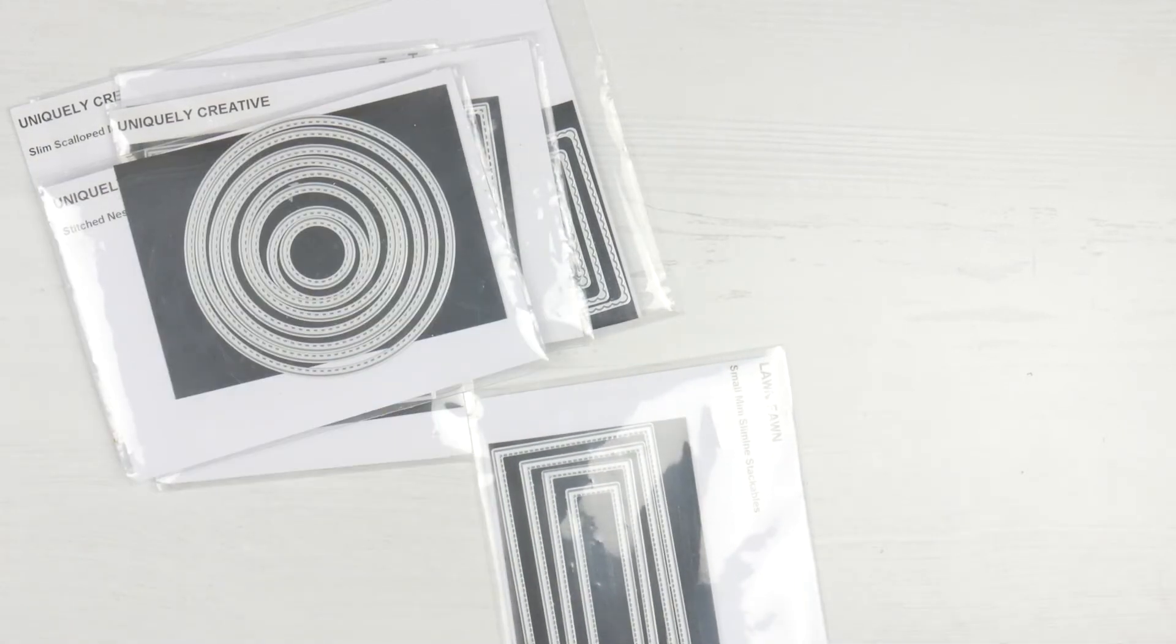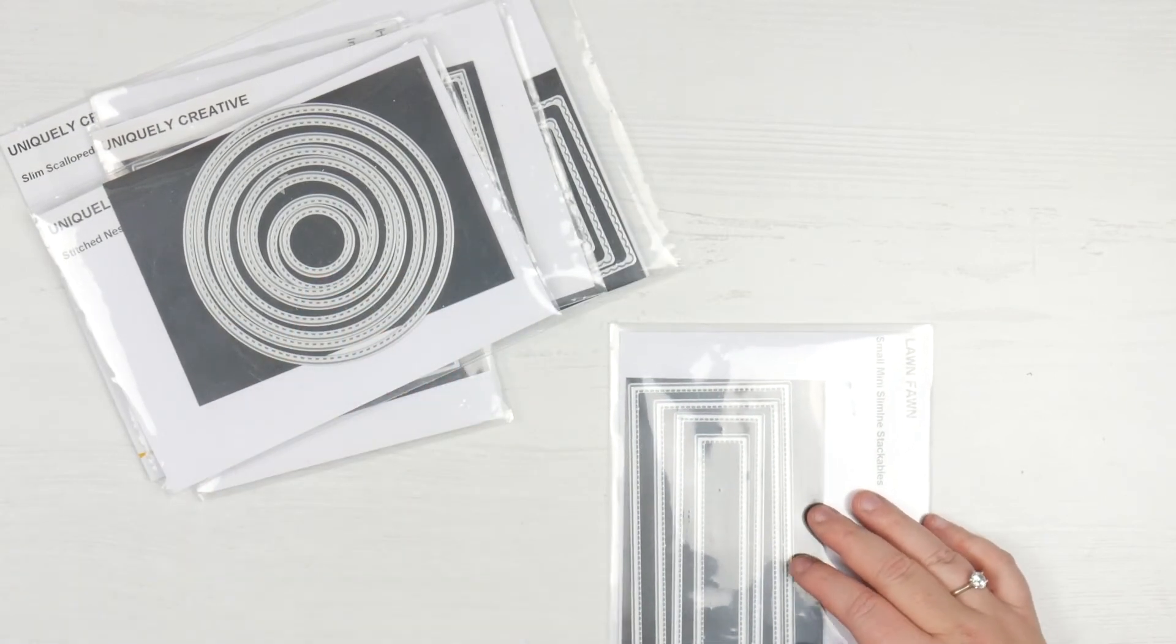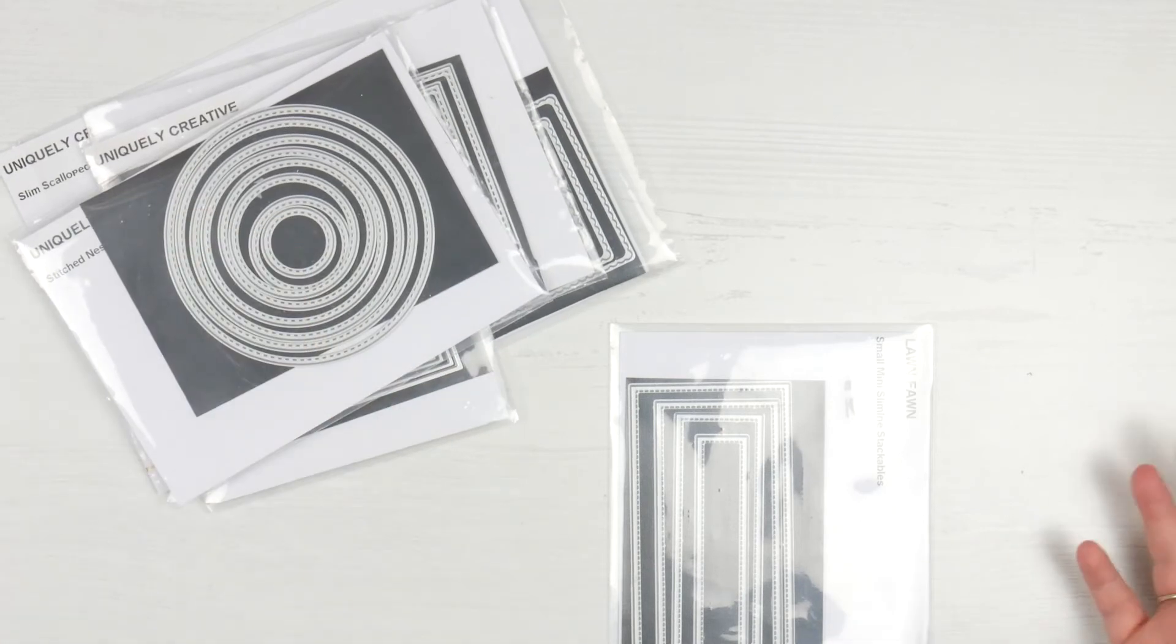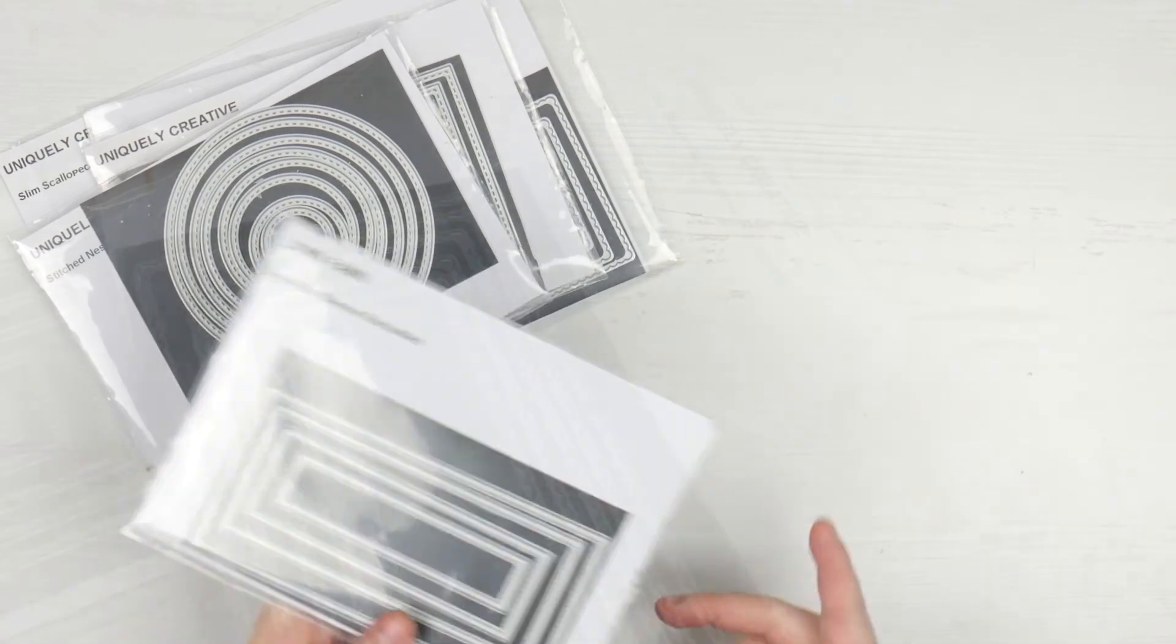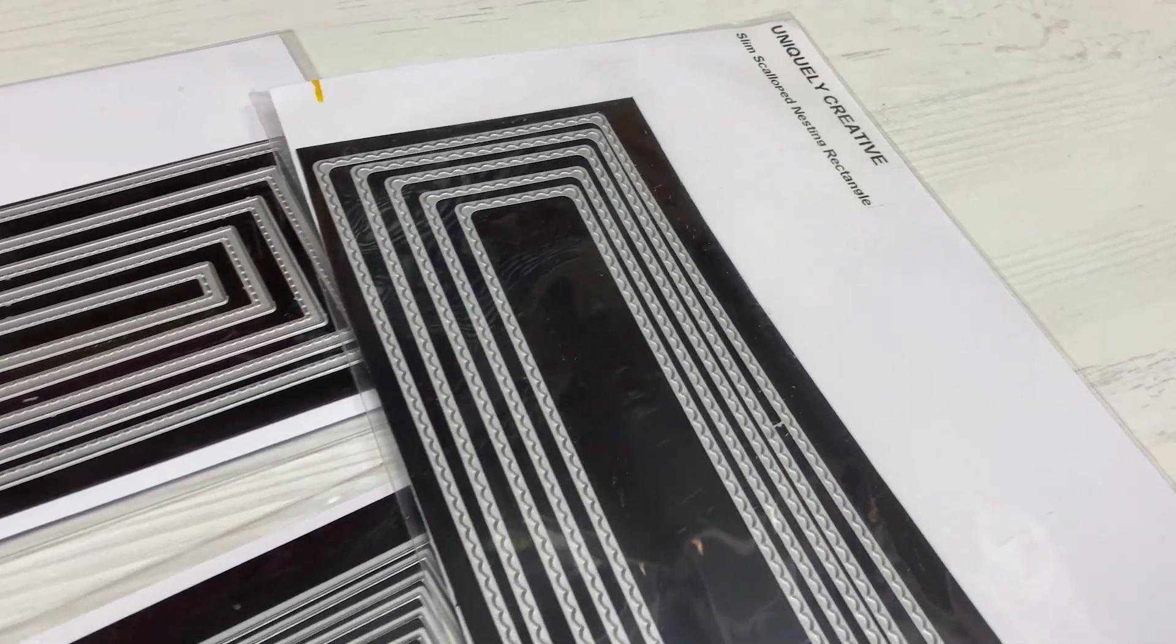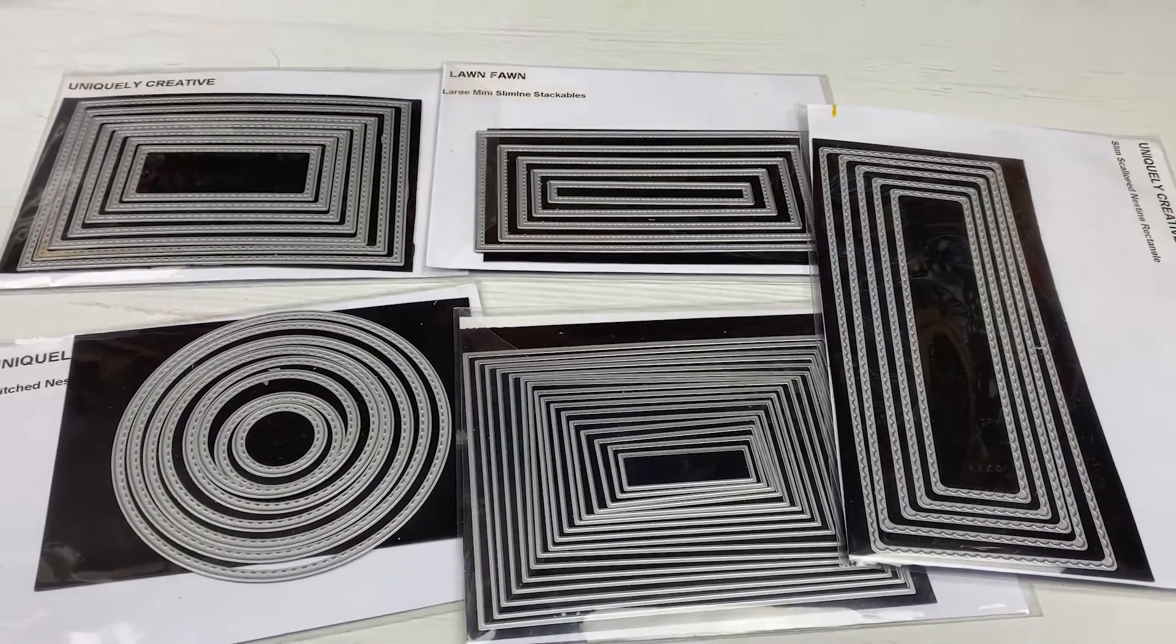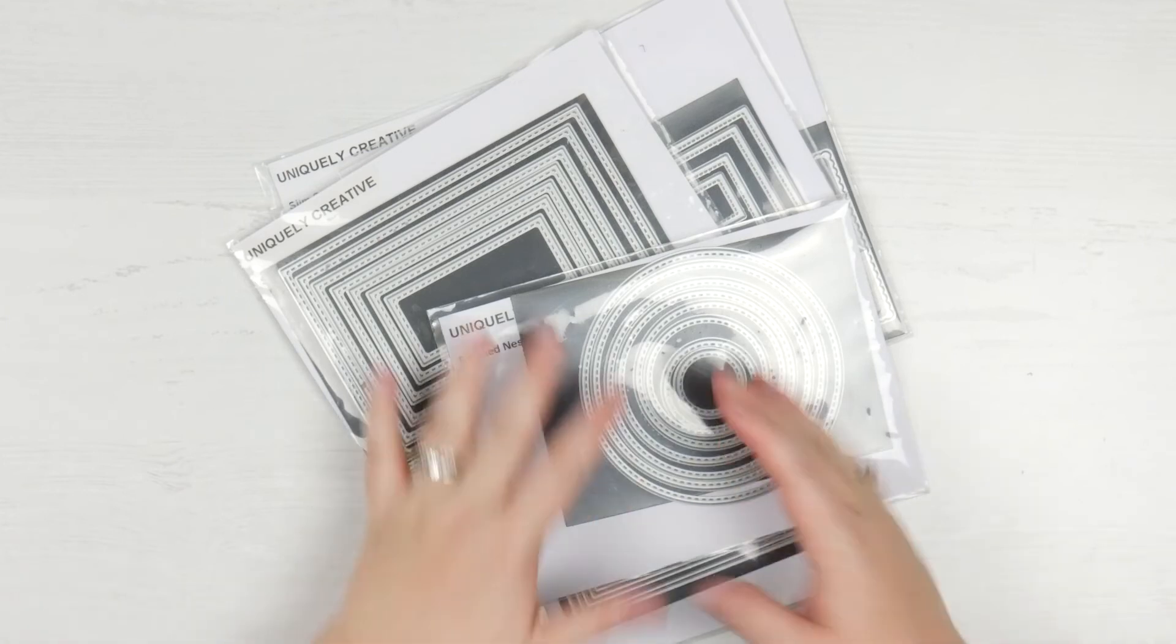I also have the Uniquely Creative Stitched Rectangles and Scalloped Rectangles and Circles. I've also got the Lawn Fawn Stitched Rectangles, which I think is important to have the US size as well, because for stuff like the Reveal Wheel they all line up with those sizes. You don't need to have Australian sizes and US sizes, but if your budget will extend to that, then that's a cool idea.